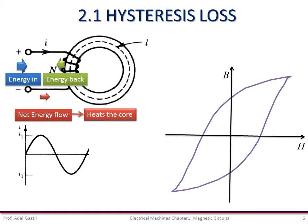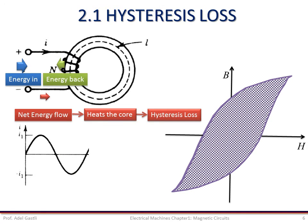So we can say that there is an energy loss that goes to heat the core. This loss of power in the core, which is due to the hysteresis effect, is called hysteresis loss. It will be shown later that the size of this hysteresis loop is proportional to the hysteresis loss.